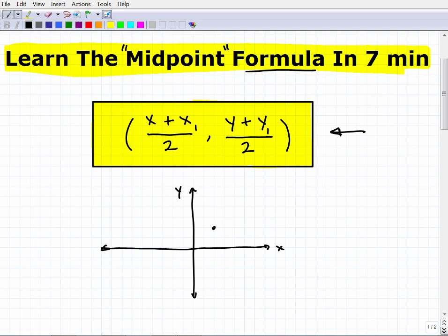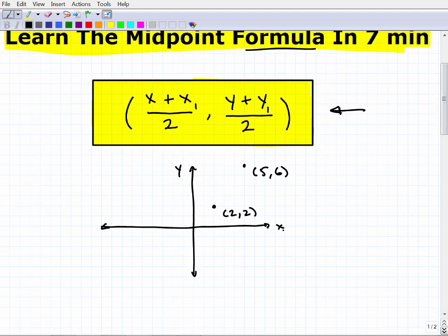So let's plot some points here. Let's say this is the point (2, 2), and let's say this is 3, 4, 5, 1, 2, 3, 4, 5, 6. Let's say this is the point (5, 6). Okay, so I have two points on the XY plane. Now what I want to do, let's just think of a line that goes through, or a line that connects these two points.